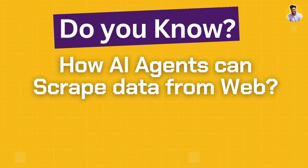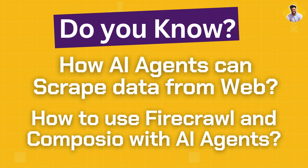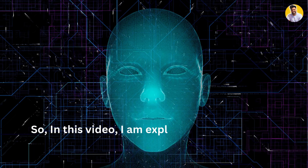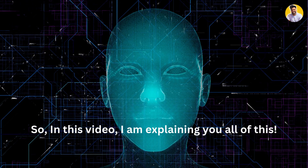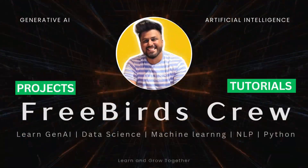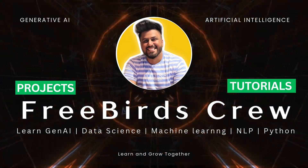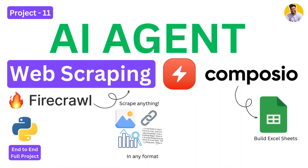Do you know how AI agents can scrape data from the web and how to fuse Firecrawl and Composio with AI agents? So in this video, I am explaining all of this. Hi guys, welcome to Freebird's View and let's create our 11th AI agent that uses the Firecrawl API to scrape the web for your task and using Composio will build an Excel sheet for you by working as tools for your AI agents as well.